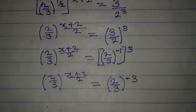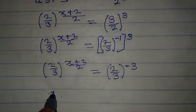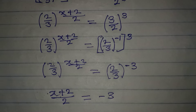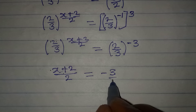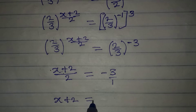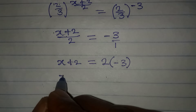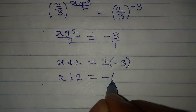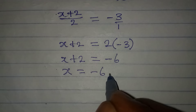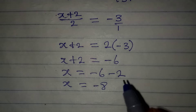Now we have the same base on both sides, which is what we were looking for. So we work with the powers: x plus 2 over 2 equals negative 3. Cross-multiplying gives x plus 2 equal to 2 times negative 3, which is negative 6. Collecting like terms, x equals negative 6 minus 2, so x equals negative 8.